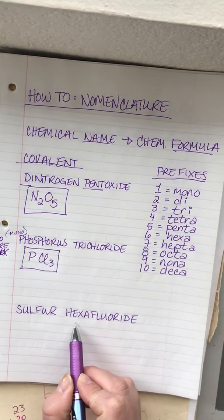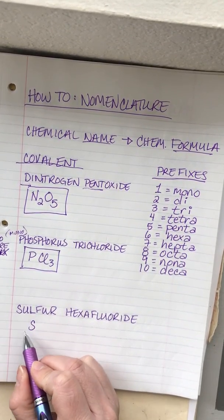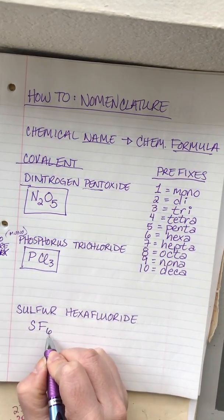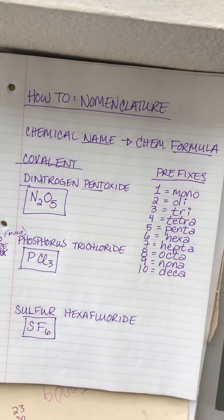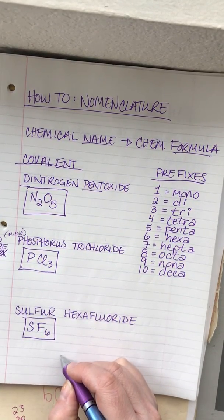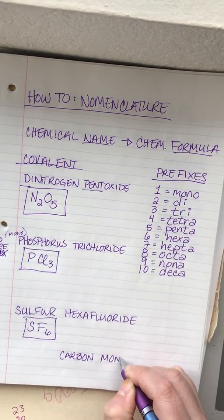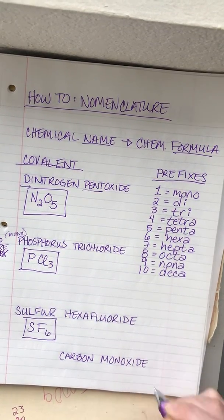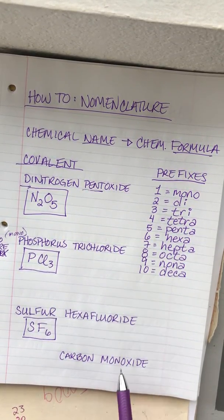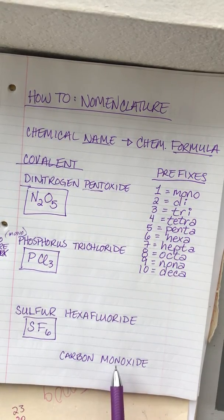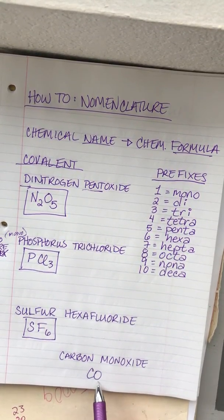Sulfur hexafluoride: there's an implied mono out front so we have one sulfur, and 'hexa' means six fluorines, giving SF₆. For carbon monoxide, carbon only has one and doesn't need 'mono' out front, but oxygen must have 'mono' because it's the second element. So we get CO — one carbon and one oxygen.